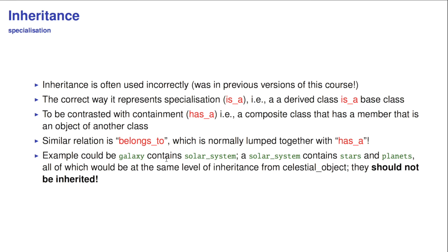And that should be contrasted with containment. Has-a. It's a composite class that has a member that's an object of another class. And similar to has-a, it actually belongs to, and they're usually lumped together. If something belongs to something else, it's not the same as is-a. A good example of a has-a relationship is a galaxy that contains a solar system. A solar system contains stars and planets, all of which would be inherited of celestial objects. They should not be inherited - a solar system should not be inherited from galaxy, and a star should not be inherited from solar system. That's kind of obvious if you think about it, but it's a mistake that gets quite commonly made. So essentially distinguish those two relationships incredibly carefully.